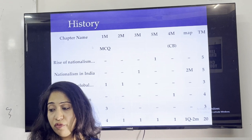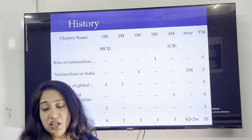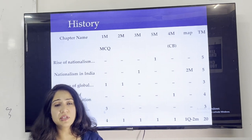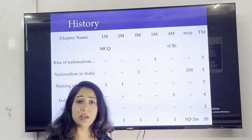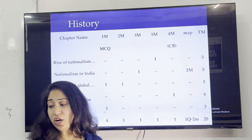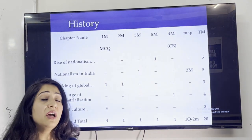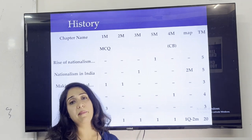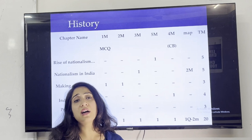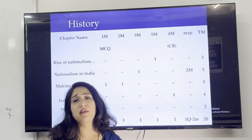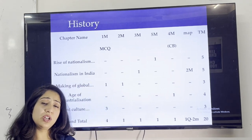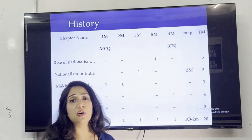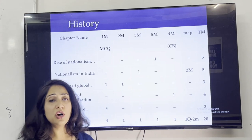If you look at Making of the Global World and Print Culture, in these two chapters, what will we need? 1 mark and other small things we need to focus on. Again, the advantage in social: we will get more than 5 mark questions, and we will have internal choice. So if we have 5 mark chapters thoroughly, and if we have some questions that are asked, then we will have an option for other questions.